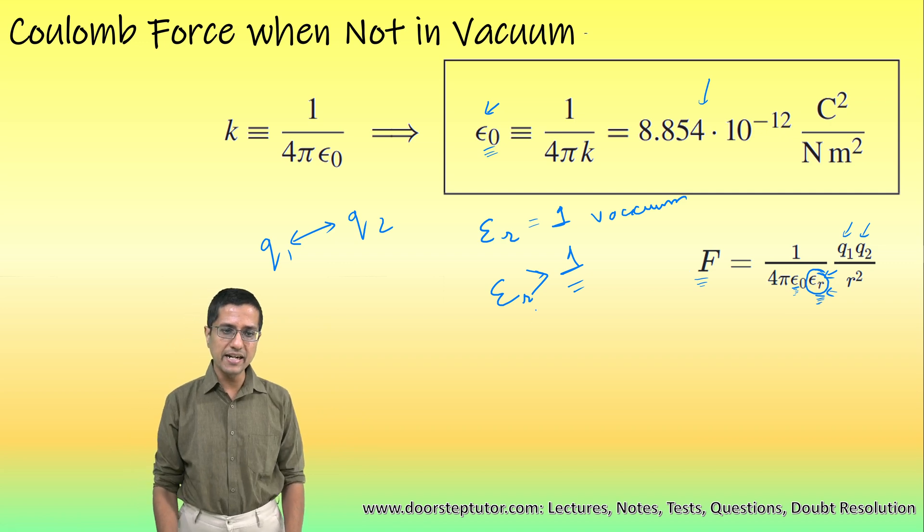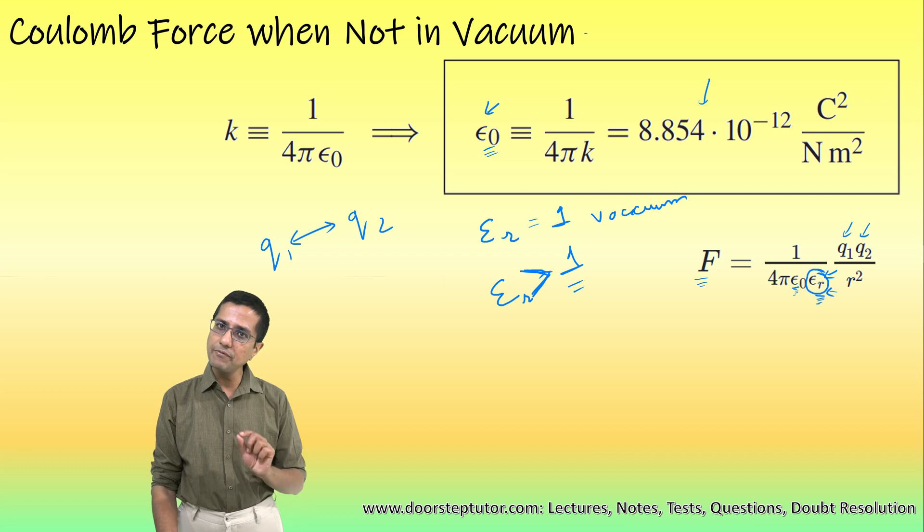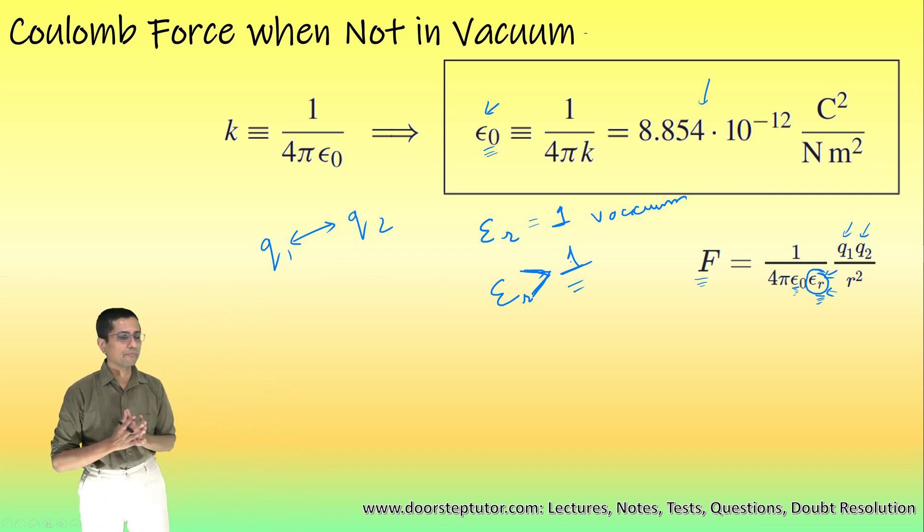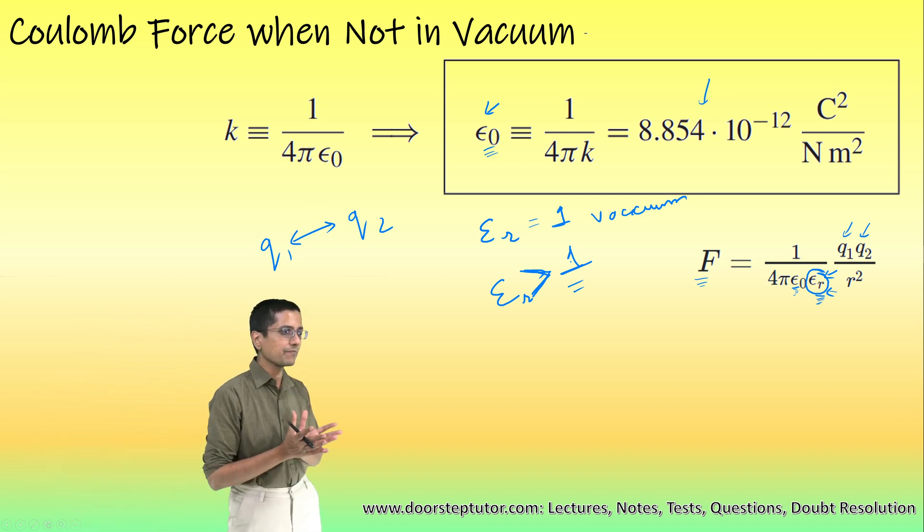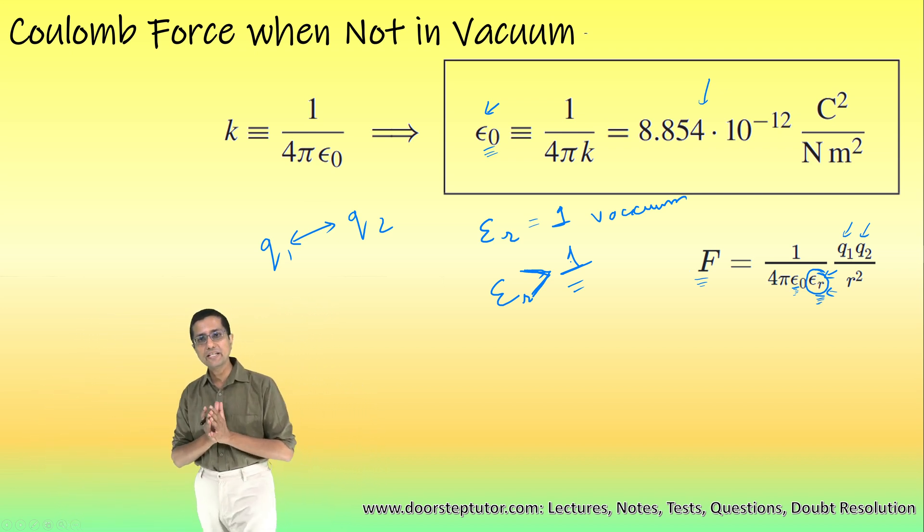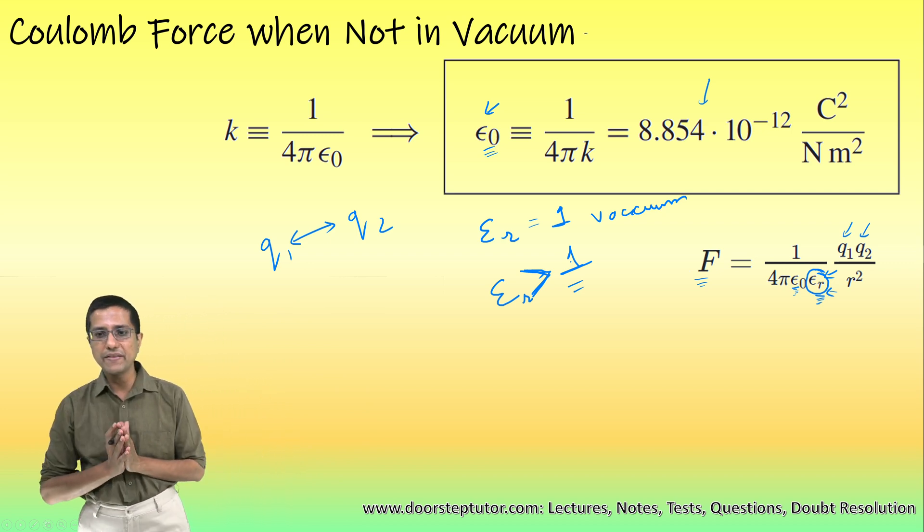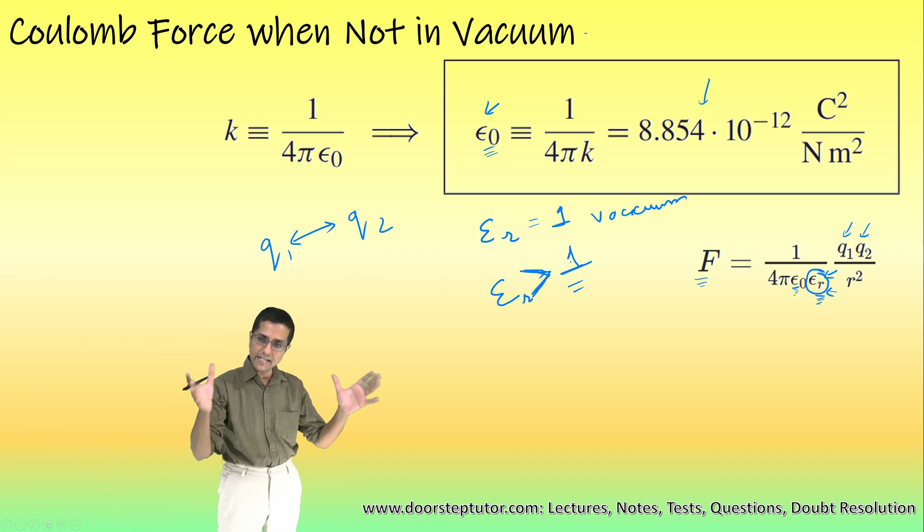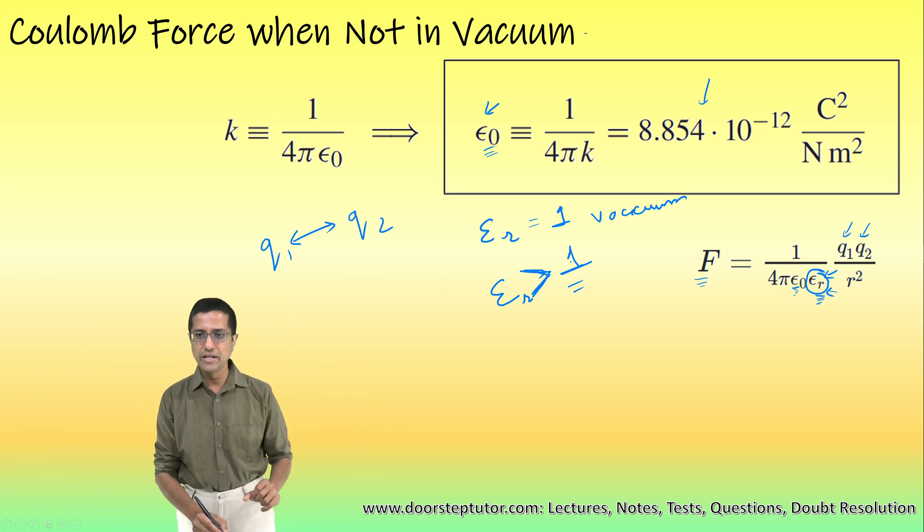Epsilon r is relative permittivity and for all the mediums except vacuum, it is greater than 1, which means that the amount of force which will be allowed by those mediums will be less than the Coulomb force experienced by the same two particles when they are placed in the vacuum in identical configuration, which means the distance is not changing.